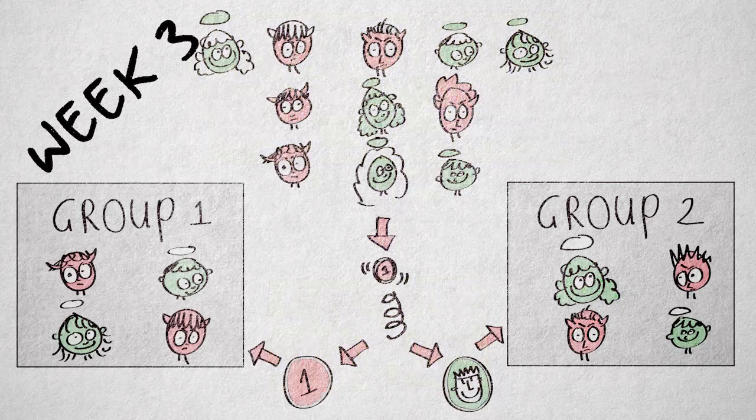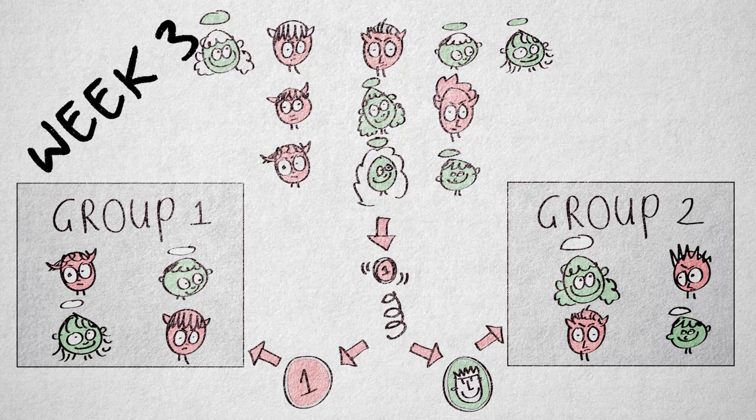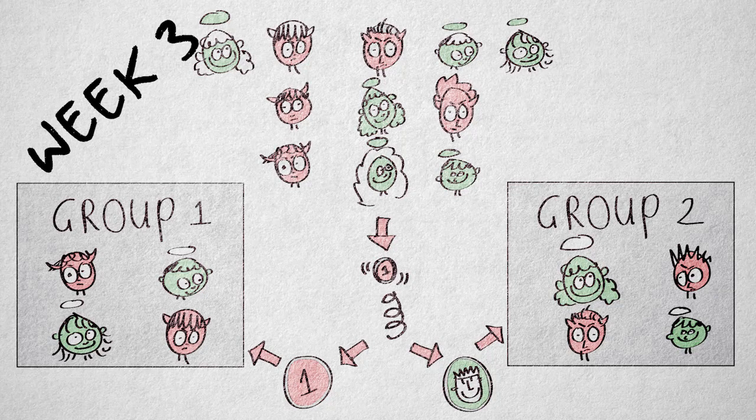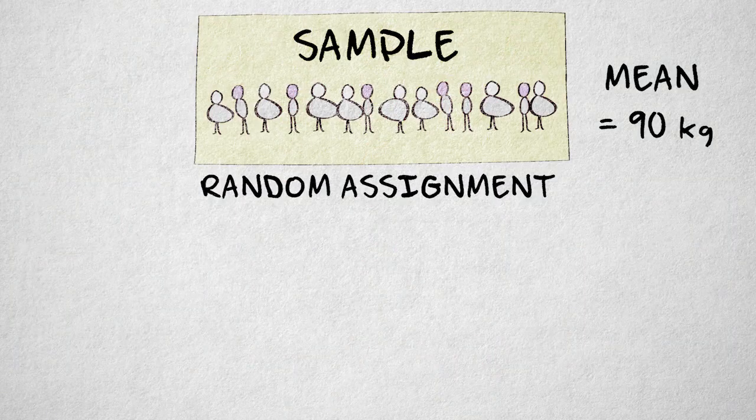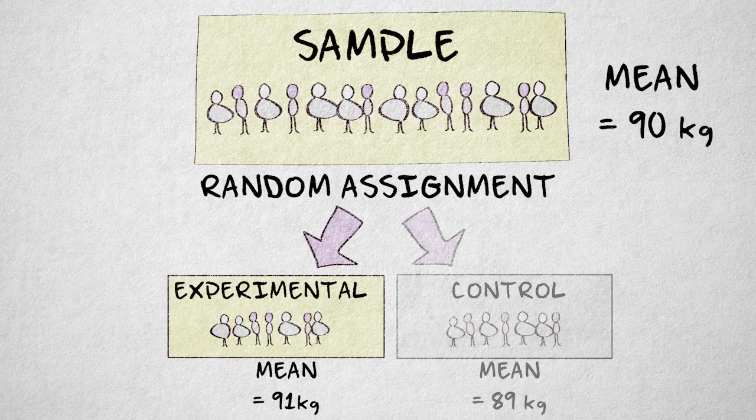We've already seen a method to eliminate systematic bias in participant characteristics. Remember how we eliminated the selection threat to internal validity? We used random assignment to get rid of systematic differences between the experimental and control condition.